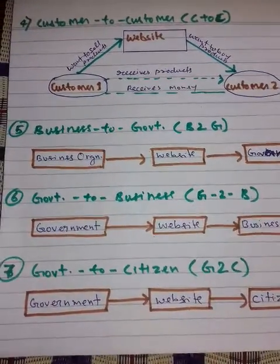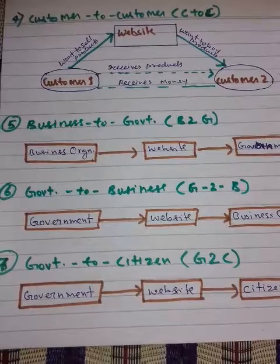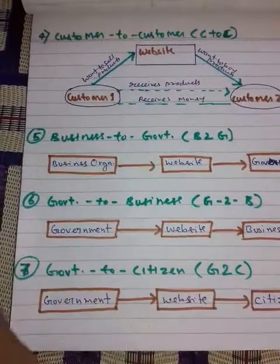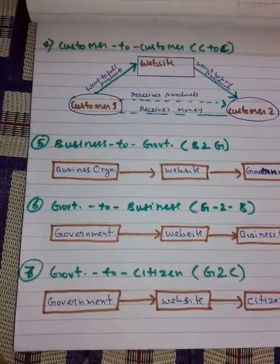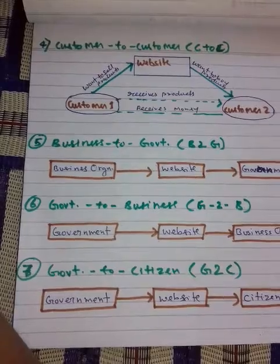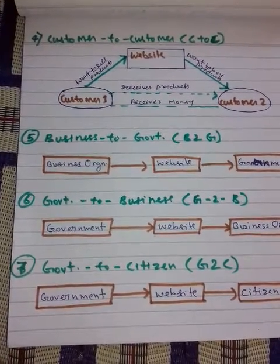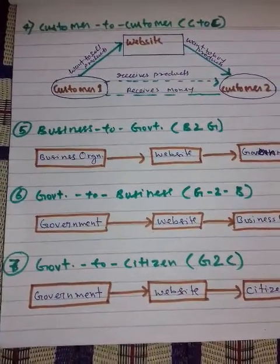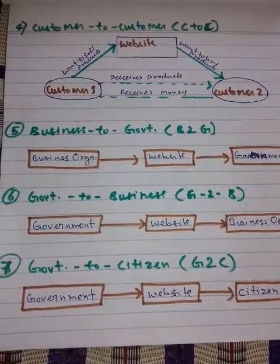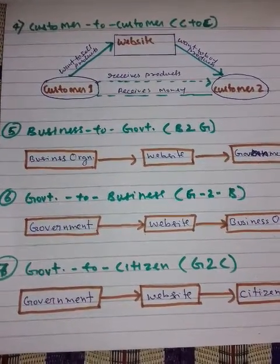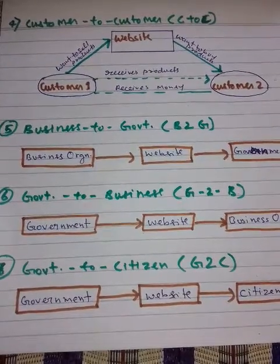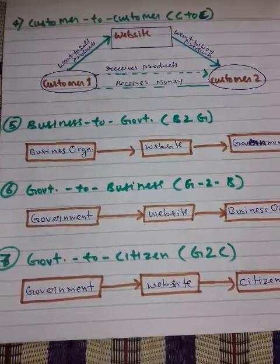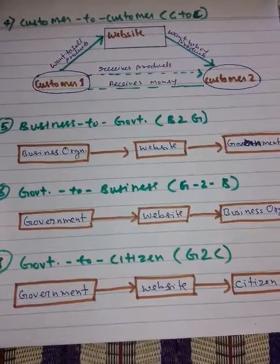Another important model is Business to Government, or B2G, which is a part of e-governance — another important part of e-commerce. E-governance is the application of information and communication technology (ICT) for delivering government services, exchange of information, communication transactions.